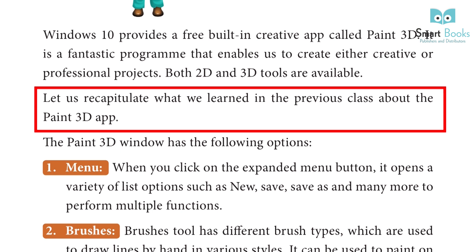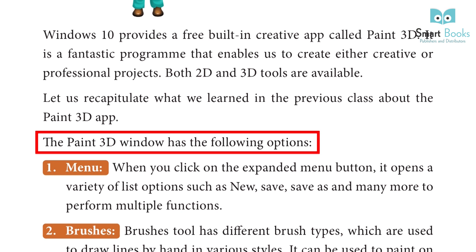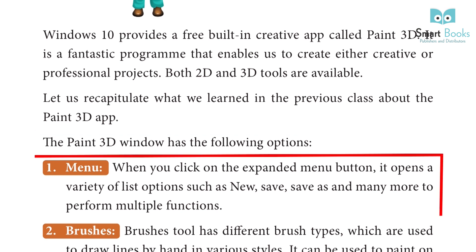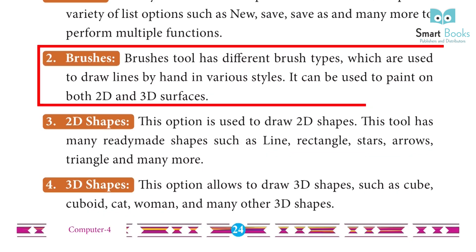The Paint 3D window has the following options. 1. Menu: When you click on the expanded menu button, it opens a variety of list options such as New, Save, Save As, and many more to perform multiple functions. 2. Brushes: The Brushes tool has different brush types which are used to draw lines by hand in various styles. It can be used to paint on both 2D and 3D surfaces.